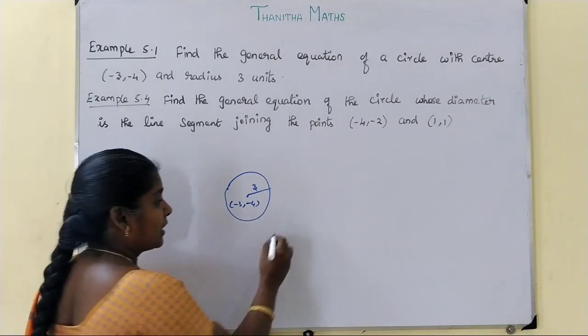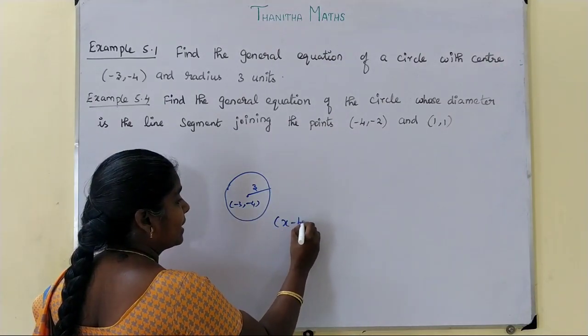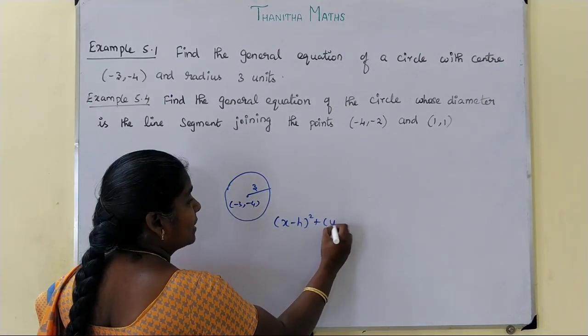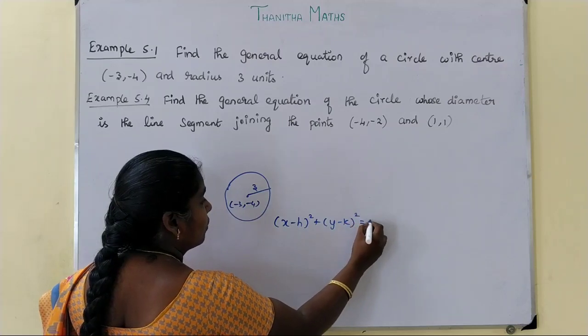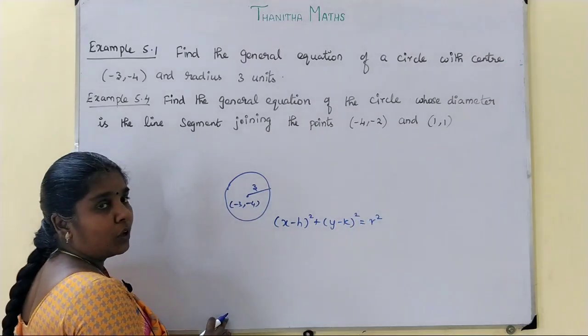This is the equation of a circle. The formula is: x minus h, the whole square, plus y minus k, the whole square, is equal to r square. This is the formula.